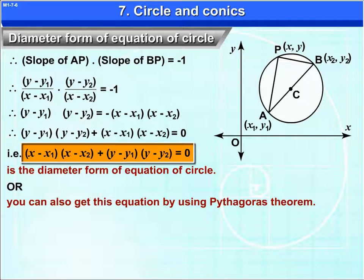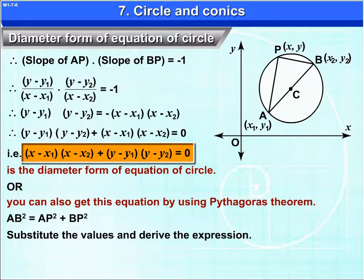Or, you can also get this equation by using Pythagoras theorem. AB² = AP² + BP². Substitute the values and derive the expression.